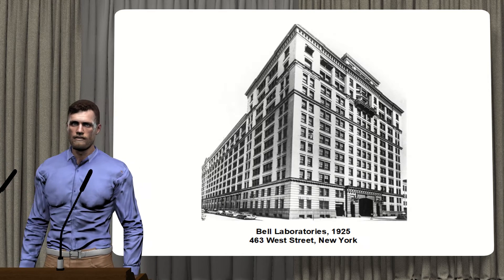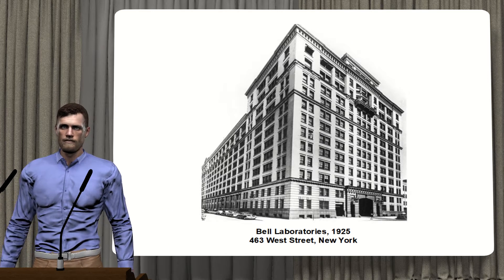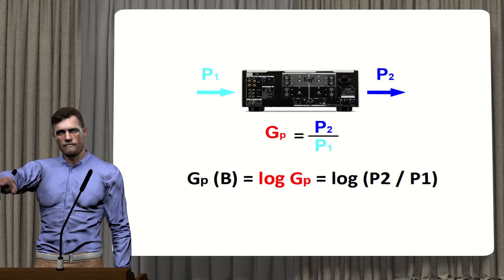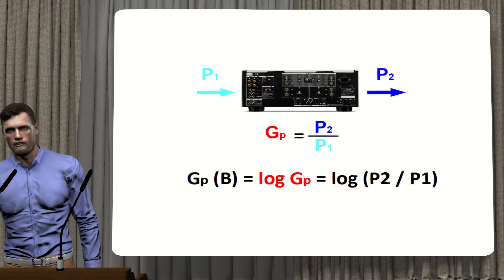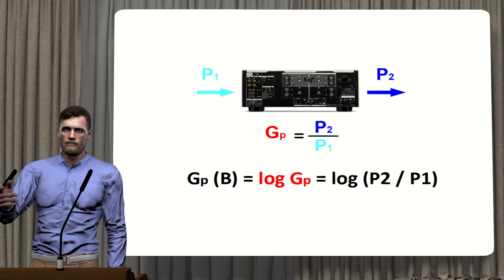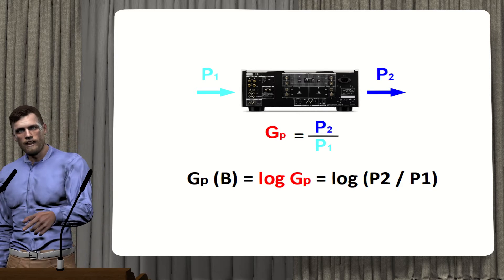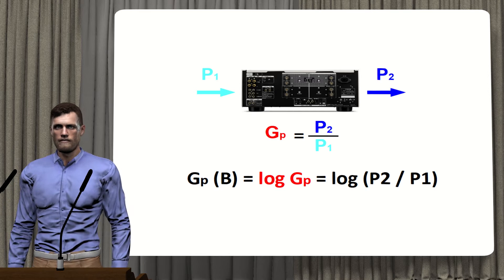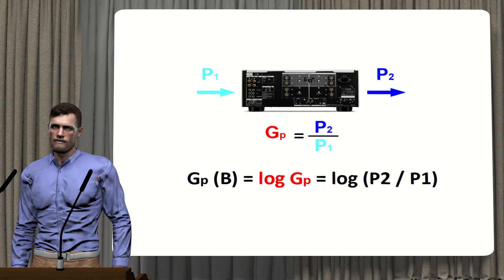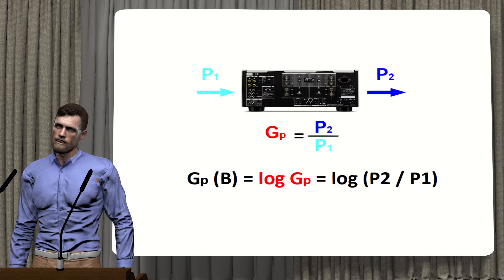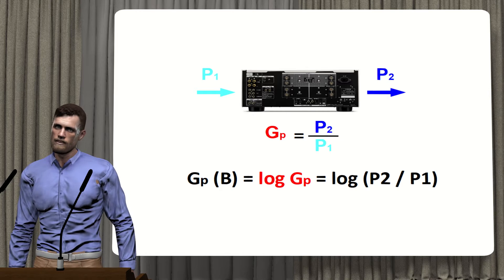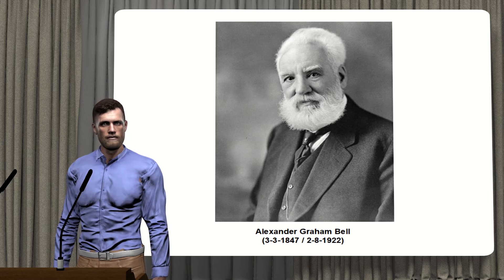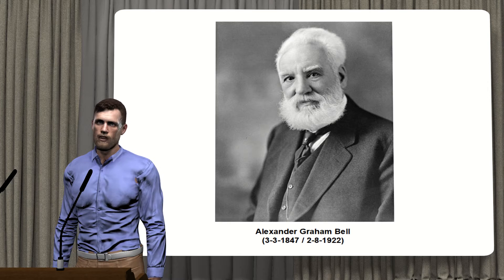Historically, the bell was conceived by Bell Telephone Laboratories, and they defined it as the logarithm of the output power of a system (P2) divided by the input power (P1), in order to measure the attenuation of telephone signal power through transmission cables. This unit was named 'bell' in honor of the inventor, scientist and engineer Alexander Graham Bell, who is known for the development of the telephone.